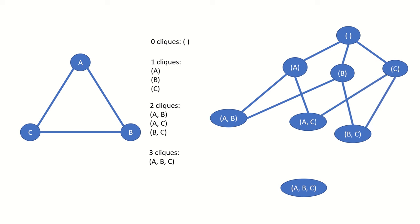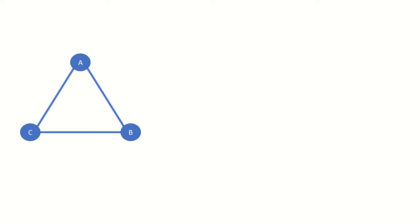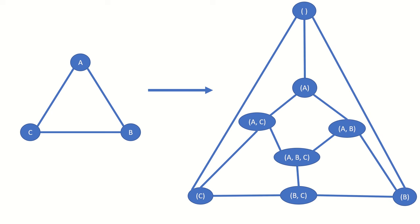For the final connections in our simplex graph — between vertices representing two-cliques A-B, B-C, and A-C and the vertex representing the three-clique A-B-C — all two-clique vertices will connect to the three-clique vertex. Clique A-B differs from A-B-C in vertex C, B-C differs from A-B-C in vertex A, and A-C differs from A-B-C in vertex B. And we're done! That is the simplex graph of the original graph, rearranged so it looks a little nicer.